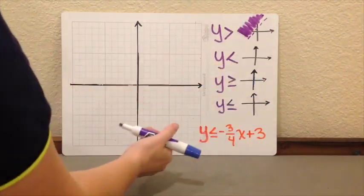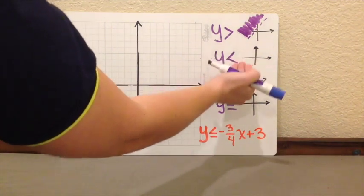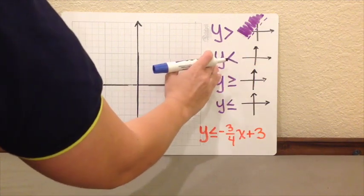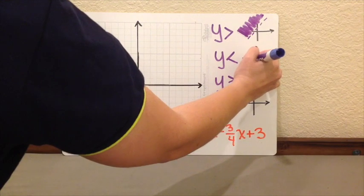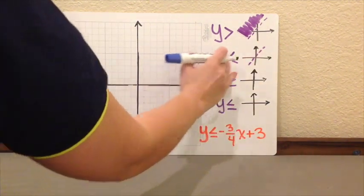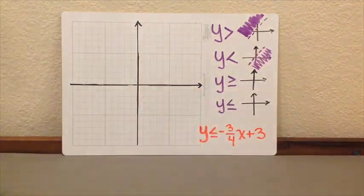Now, the second inequality that we have, what if y is less than your mx plus b? So again, in this case, since y is less, you're going to use a dotted line. And you are going to shade, since y is less, the bottom piece of the graph.